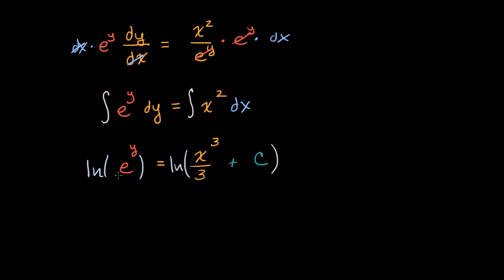Well, the natural log of e to the y, what power do we have to raise e to to get to e to the y? Well, that's why we took the natural log. This just simplifies as y. And we get y is equal to the natural log of what we have right over here. x to the third over three plus c. And we are done.